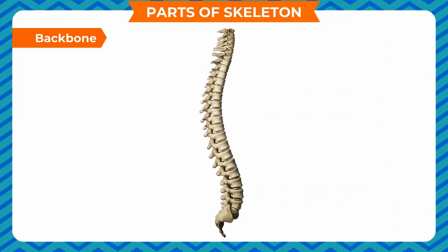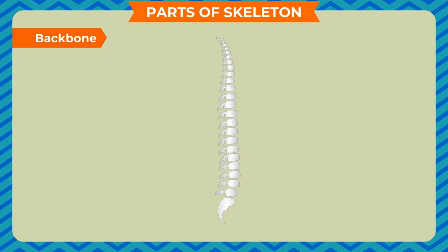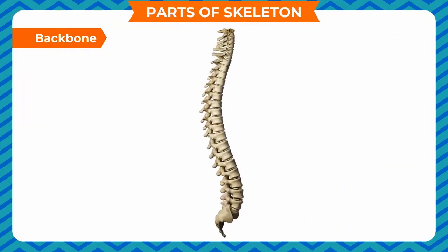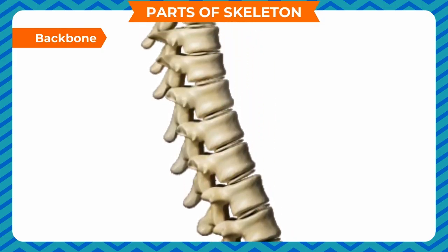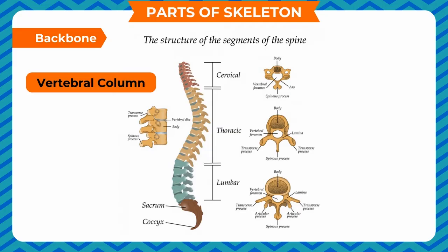Backbone: The backbone is made up of 33 small bones called vertebrae, which are joined to each other. The joints allow slight movement of the vertebrae, which helps us to bend or twist our back. The backbone is attached to the base of the skull and forms the central supporting rod for the skeleton. Each vertebra has a hole through which the spinal cord passes, so the backbone also protects the spinal cord. It is also called the vertebral column and allows humans to stand upright and maintain their balance.